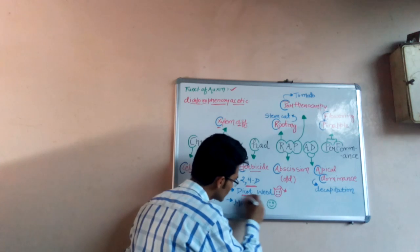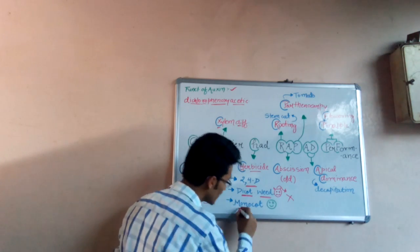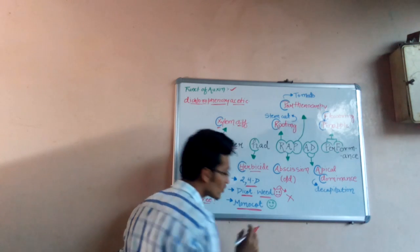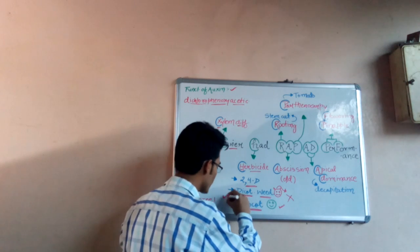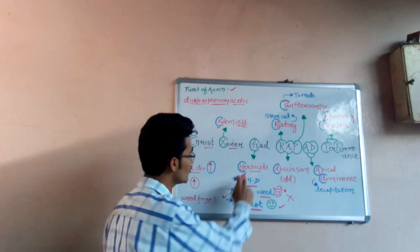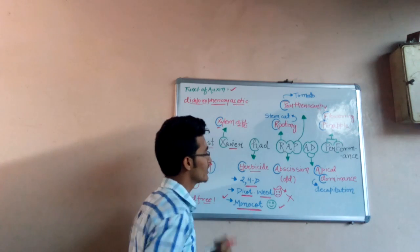The herbicide 2,4-D just kills dicot weeds. It kills dicot weeds, but mature monocot weeds are not affected by 2,4-D. This is a very important point from examination point of view: 2,4-D kills dicot weeds but it does not affect the monocot weeds.